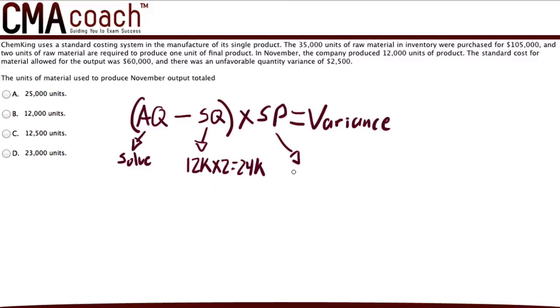The standard price, we take the $60,000 material cost allowed, and we divide that by the number of raw material in units that we used. And that gives us $2.50 as the standard price per each raw material unit.